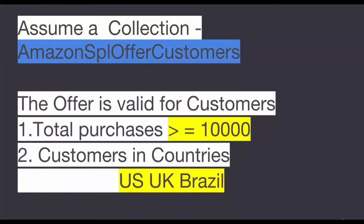Assume a special offer on Amazon which is valid for customers whose total purchases are greater than $10,000, and the customers have to be from one of three countries: US, UK, and Brazil. This is the validation we need to perform before inserting a document into the Amazon special offer customers collection.